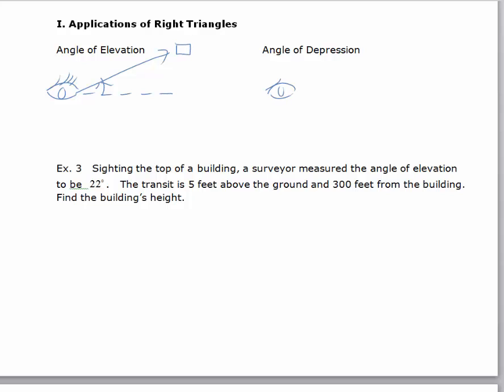As opposed to an angle of depression, thinking of from the horizontal, you would be looking down at some object. So this first example involves an angle of elevation.